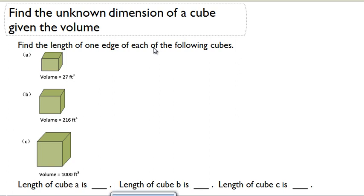Now we're going to work backwards. Instead of using a cuboid, we're going to go back to a cube. We're going to find the unknown dimension of a cube given the volume.